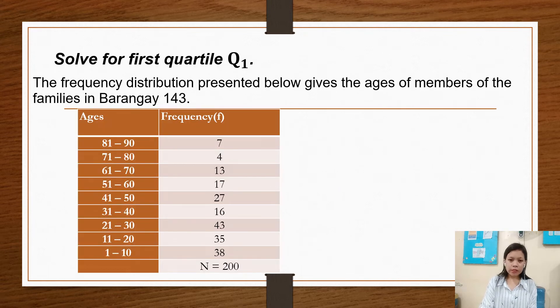So first, we have to solve for first quartile of group data. The frequency distribution presented below gives the ages of members of the families in Barangay 143.